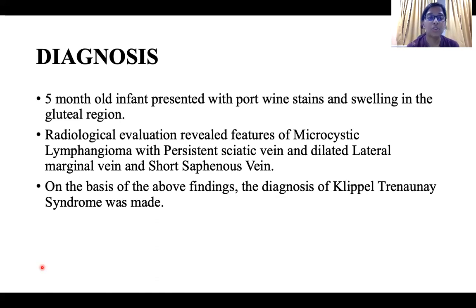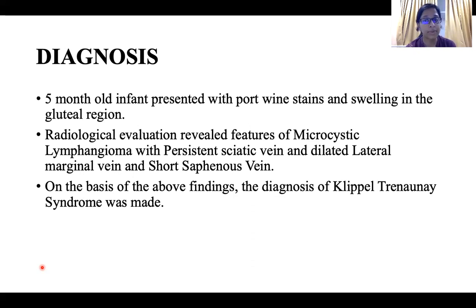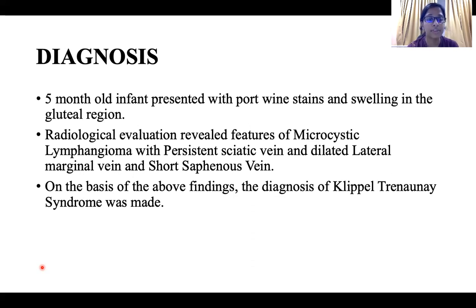Diagnosis: A five-month-old infant presented with port-wine stains and swelling in the gluteal region. Radiological evaluation revealed features of microcystic lymphangioma with persistent sciatic vein and dilated lateral marginal vein and short saphenous vein. On the basis of the above findings, the diagnosis of Klippel-Trénaunay syndrome was made.